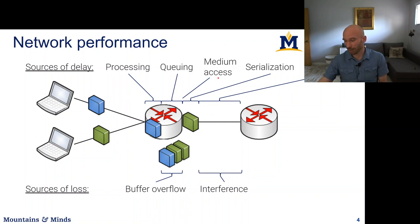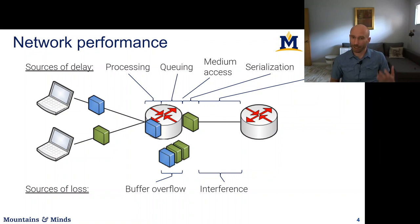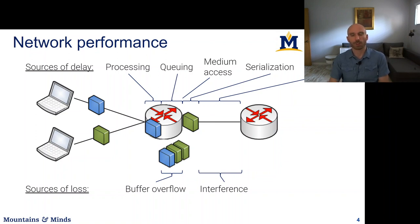The other source of packet loss is interference. If you're transmitting a packet on a WiFi link and someone turns on a microwave right next to your router, the interference can be strong enough that the receiver can't decode the packets. Think of it as trying to have a conversation when a jackhammer starts right next to you — the person you're talking to can't hear what you're saying and will ask you to repeat yourself.